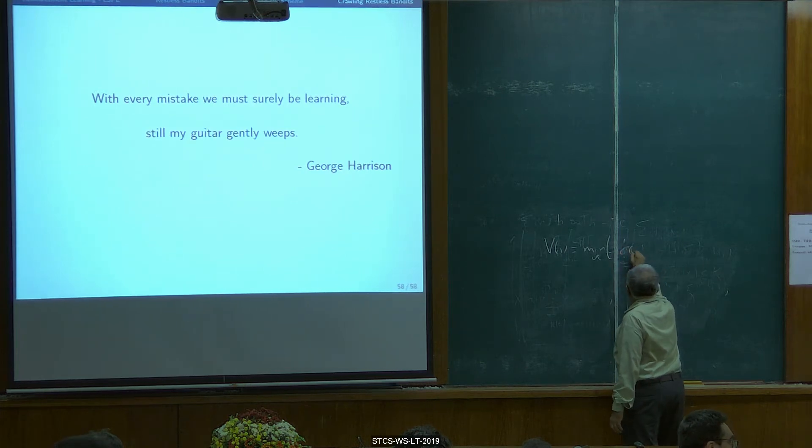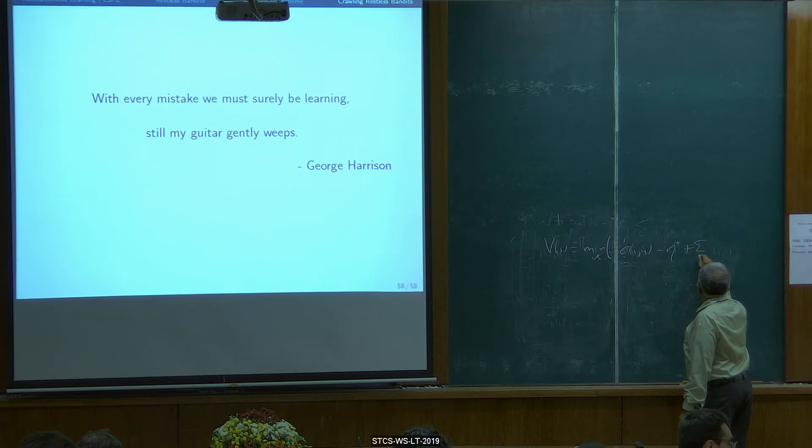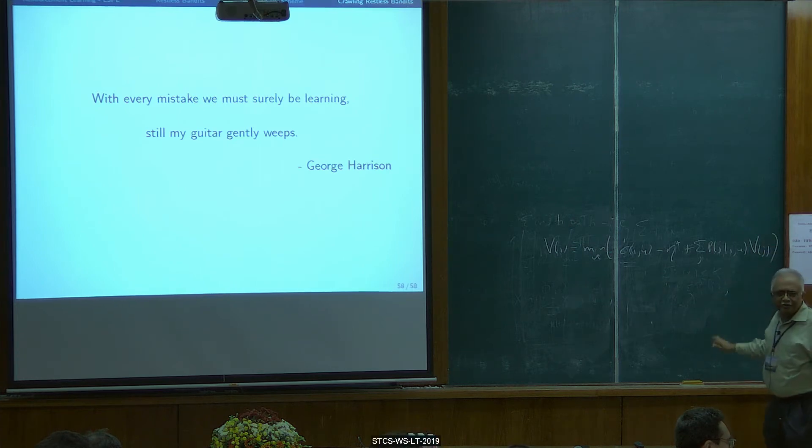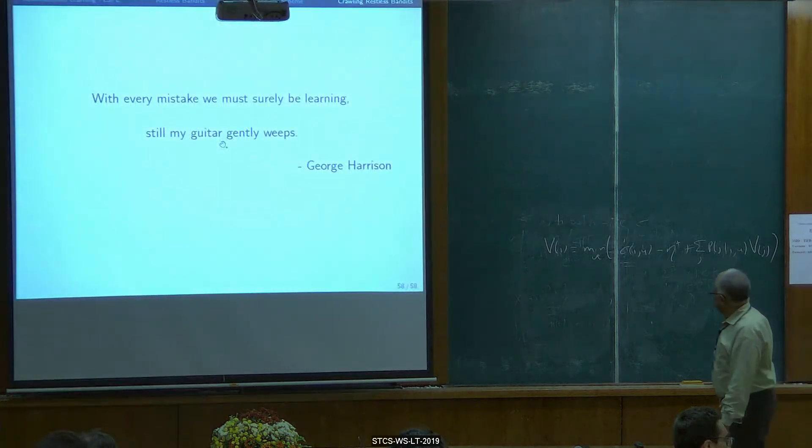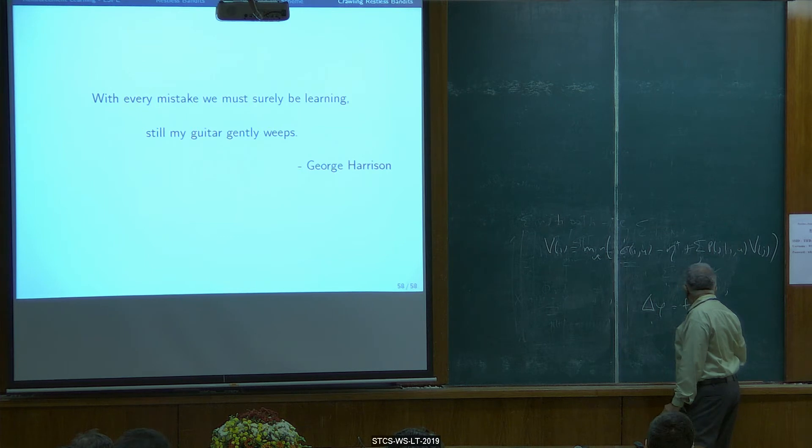So this is cost, let me call it I minus theta star. Now this will depend on control. So this is kind of a non-linear Perso equation, the dynamic programming equation. The original Perso equation is something like this, I may be off by a sign, maybe minus S here, I am not sure.